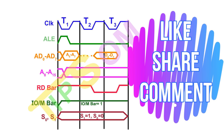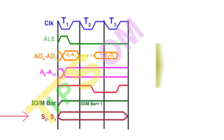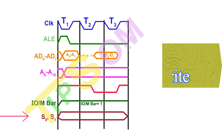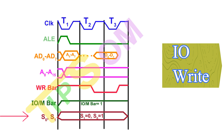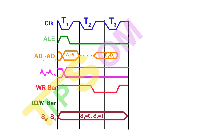Next I am going to input/output write. In the IO write diagram, two things will change: the IO/M bar stays 1 since it is an I/O operation, but S0 and S1 will change — S0 becomes 1 and S1 becomes 0. Also, the RD bar changes to a WR bar. The write bar is also an active low signal; it goes low when data is being written. So when D0 to D7 data is being written, the WR bar is low.